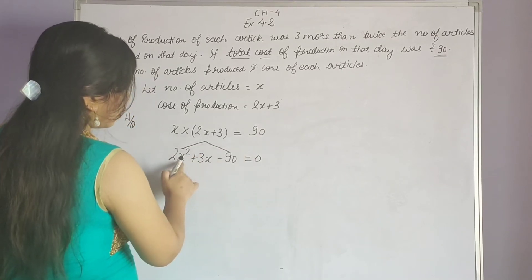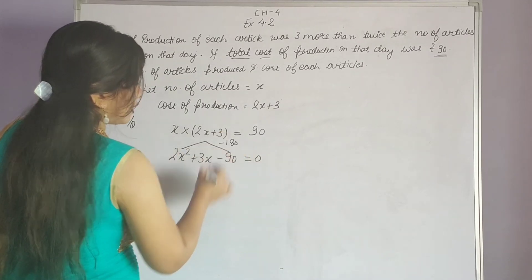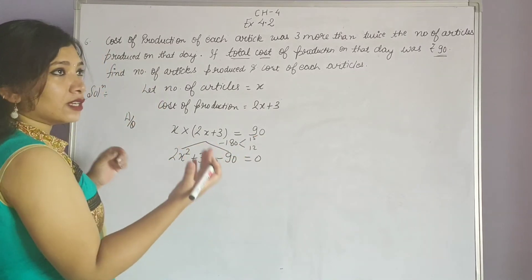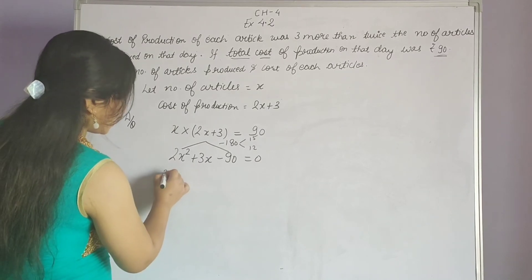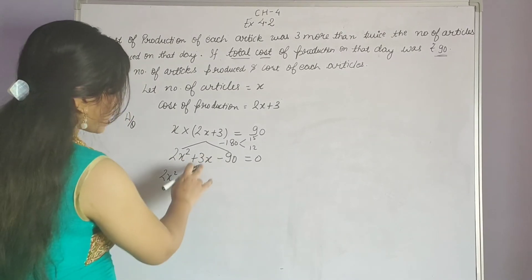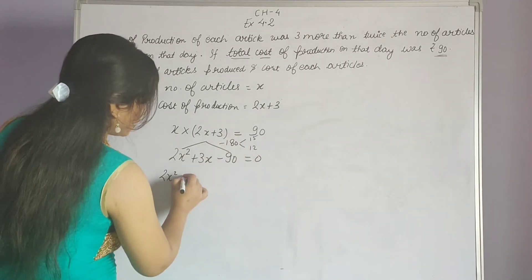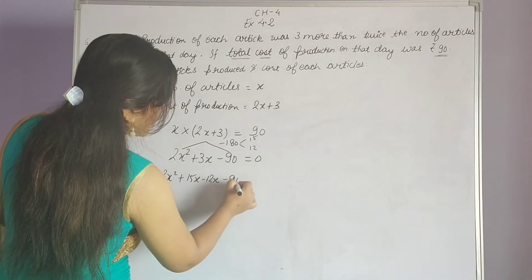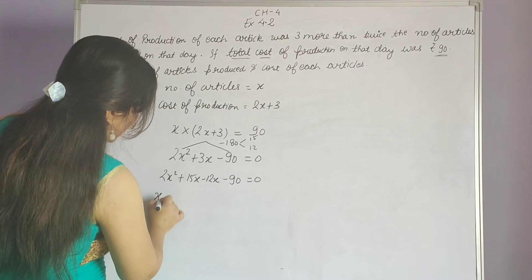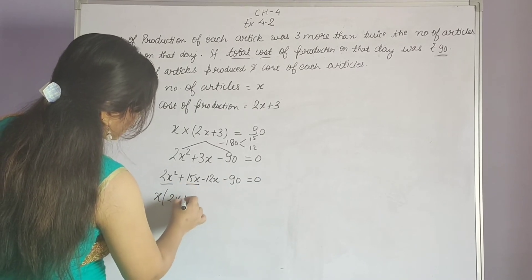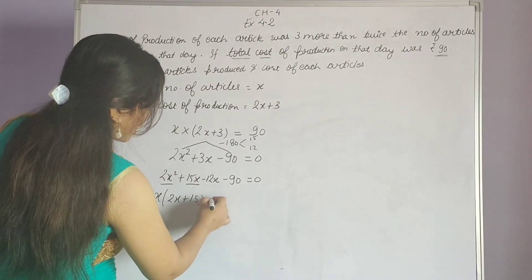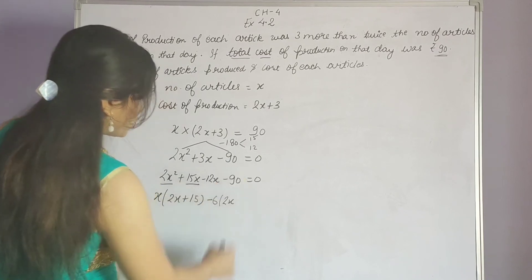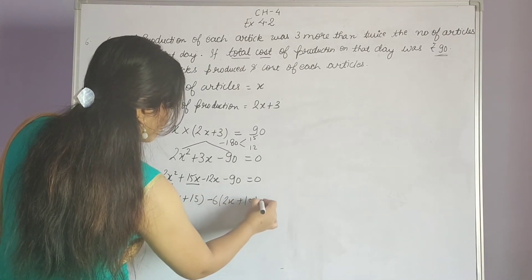Now factorize as we have been doing — multiply the coefficient of x squared with the constant term, then factorize. We need to get 3x in the middle: if we take 15x minus 12x, that gives 3x. So 2x squared plus 15x minus 12x minus 90 equals 0. Take x common from the first two terms: x(2x plus 15), and take 6 common from the last two terms: 6(2x plus 15), giving (x minus 6)(2x plus 15) equals 0.